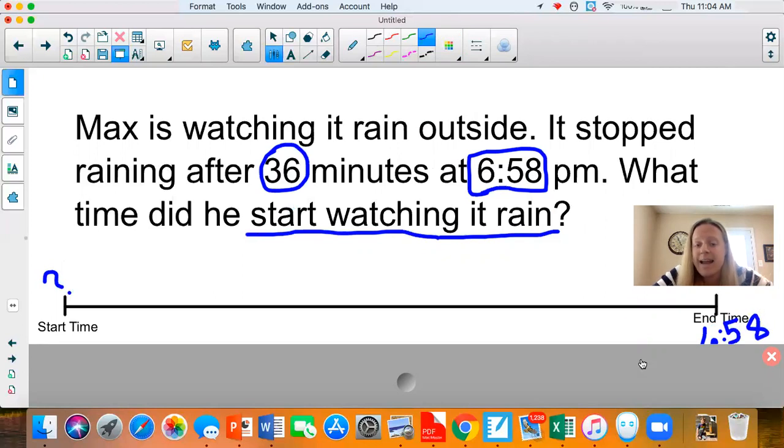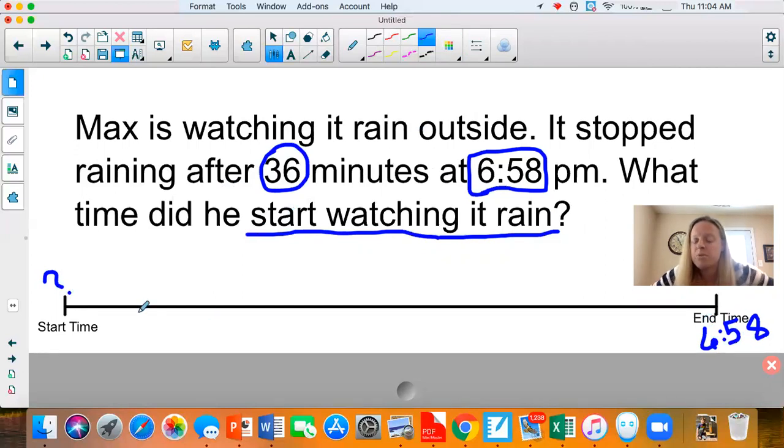Now, the other piece of information that I have, I know that it rained for 36 minutes. So if it ended at 6:58 and I'm going back to my start time. Now remember with a number line, when you go back, you're not adding this time. You're going to subtract if you're going back on the number line. So we need to subtract 36 minutes.